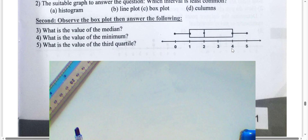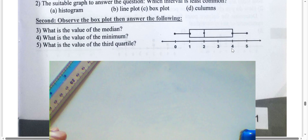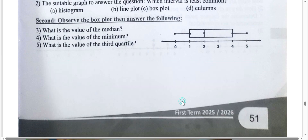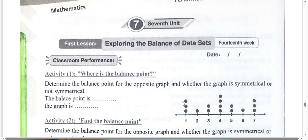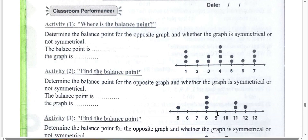We have now finished quizzes letter A, B, and C from weekly assessment number 13. For weekly assessment number 14, we will study exploring the balance of data and finding the mean. We can find the balance point — it lies in the middle where the graph is symmetrical. Four is in the middle, so four is the balance point.